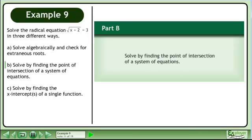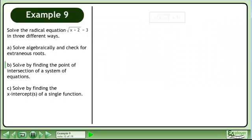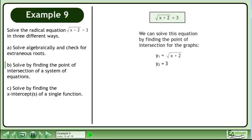In part B, we'll solve by finding the point of intersection of a system of equations. We can solve this equation by finding the point of intersection for the graphs y1 equals the square root of x plus 2 and y2 equals 3.